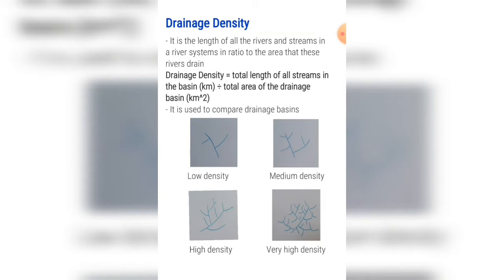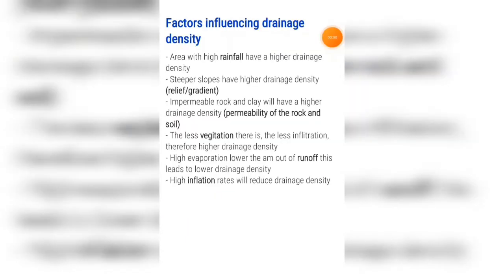It is used to compare drainage basins. You get four drainage densities: low density, medium density, high density, and very high density.